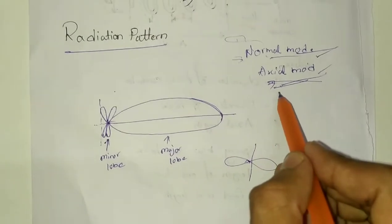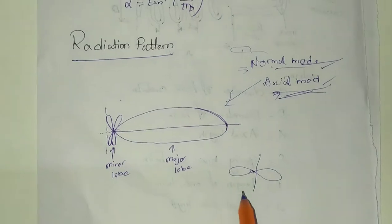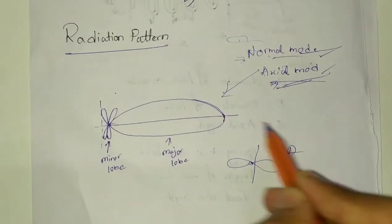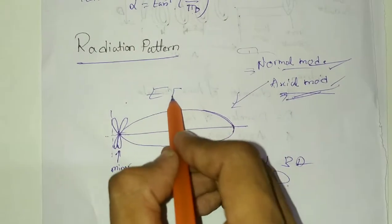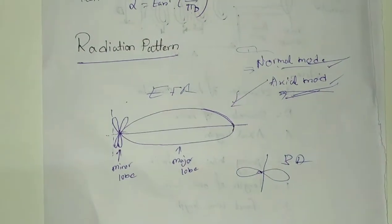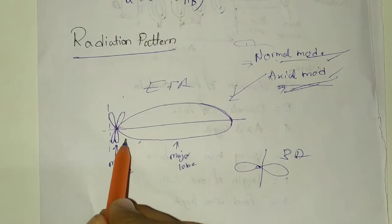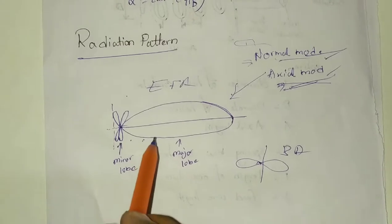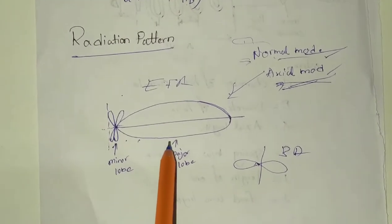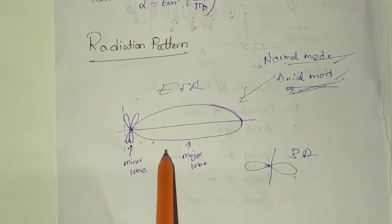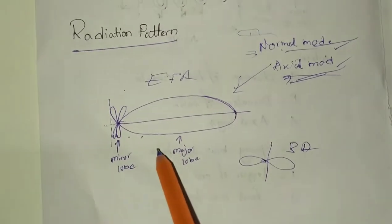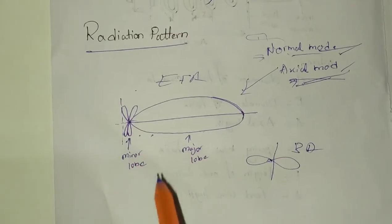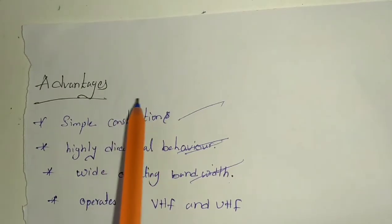In axial mode operation, the radiation pattern is unidirectional — similar to an end-fire array. The radiation pattern is unidirectional, meaning it radiates over a long distance. In helical antenna, we consider the axial mode operation. This shows a major lobe and minor lobes.